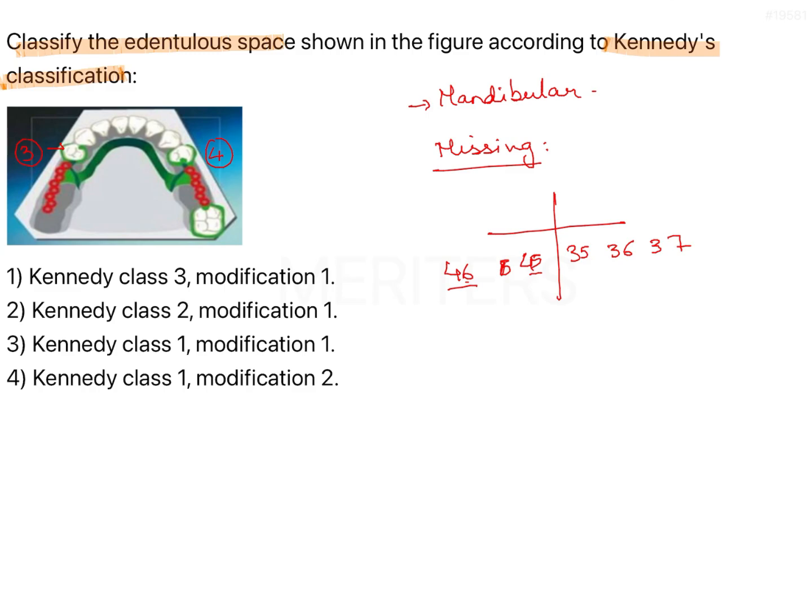Now in the given situation, the last tooth missing here, posterior most is 3-7, correct, and here we have 2 edentulous spaces. This is space 1 and this is space 2.